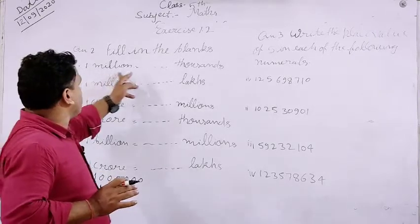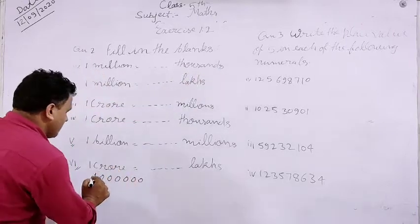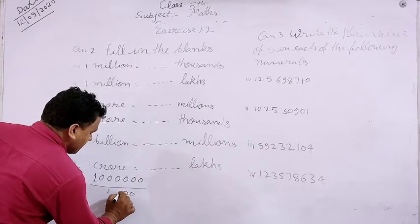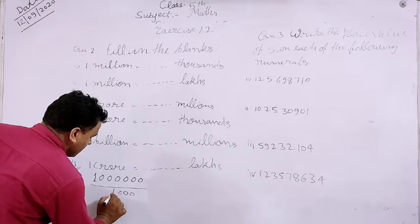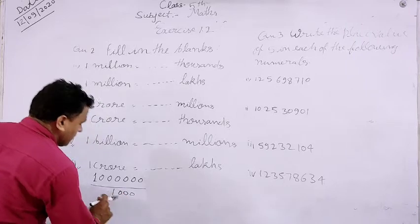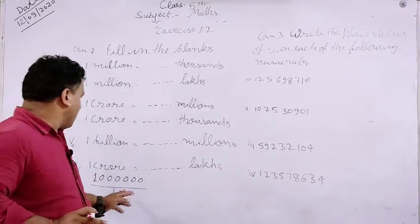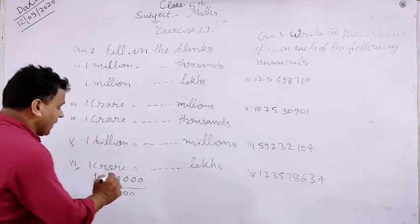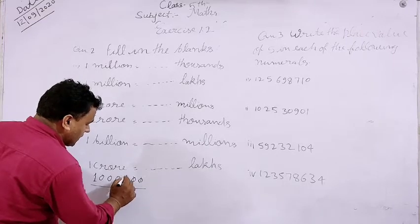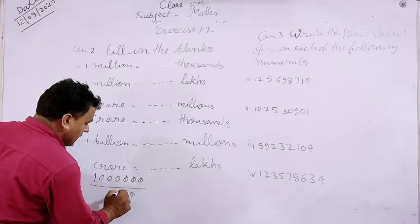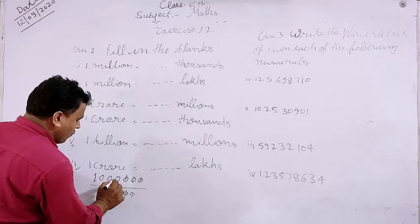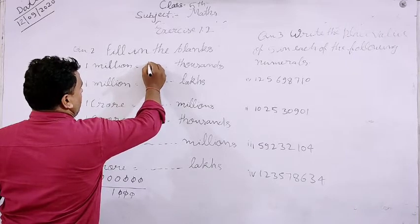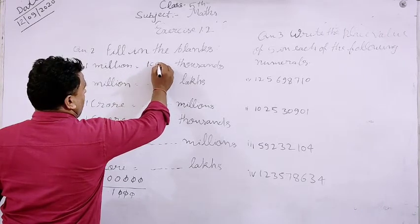Toh aapko ab isme thousands mein change karna hai. Aap thousands se divide kar denge — ones, tens, hundreds, thousands. One million mein thousands se divide kar denge. Yahan pe zeros ko zeros se cancel kar denge — teen zeros the, teen zeros cancel ho gaye. Ones, tens, hundreds, thousands — aap yahan pe thousand fill up karenge.